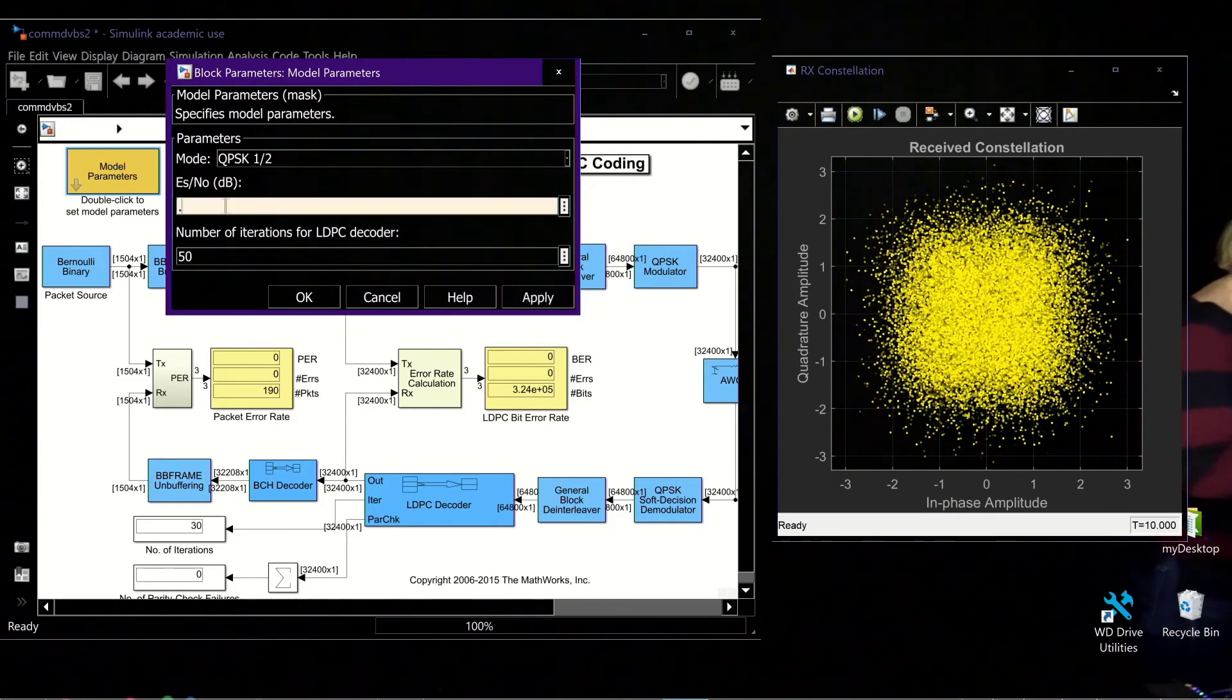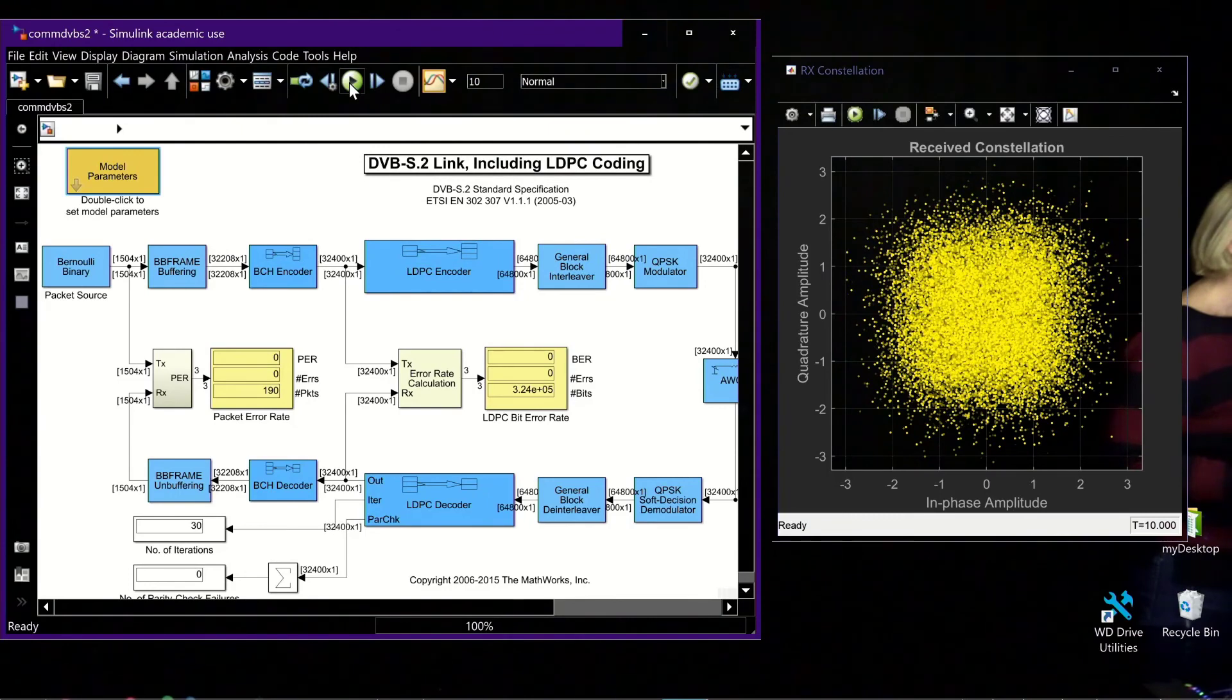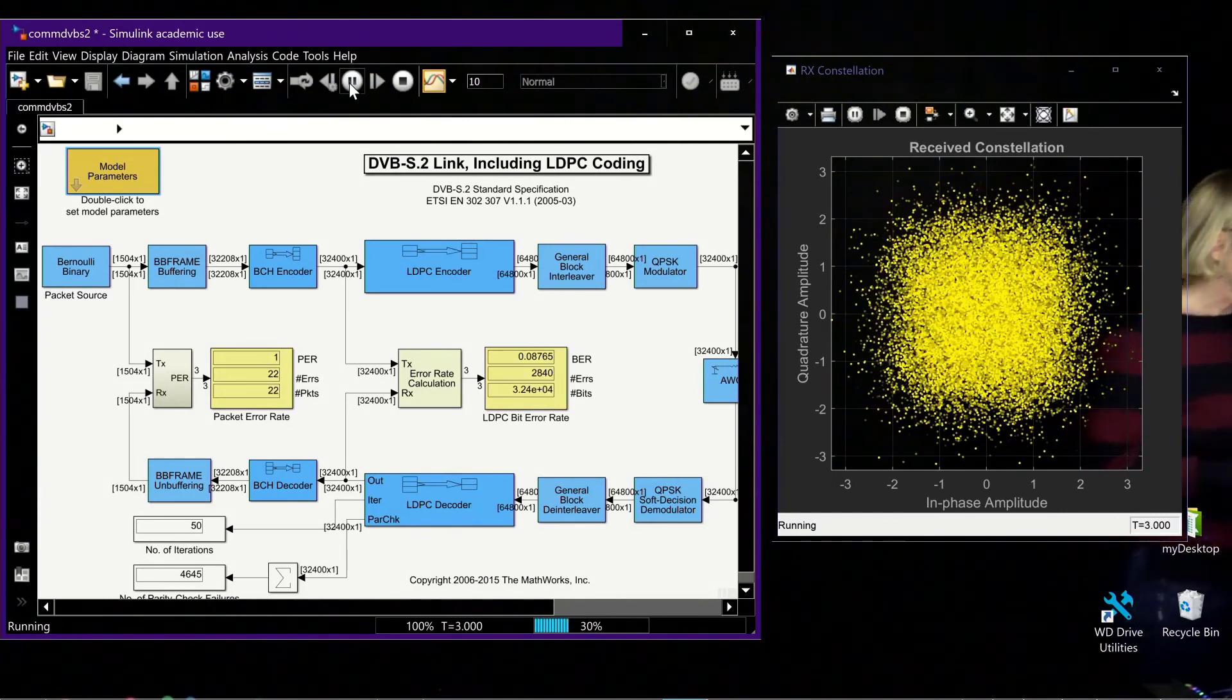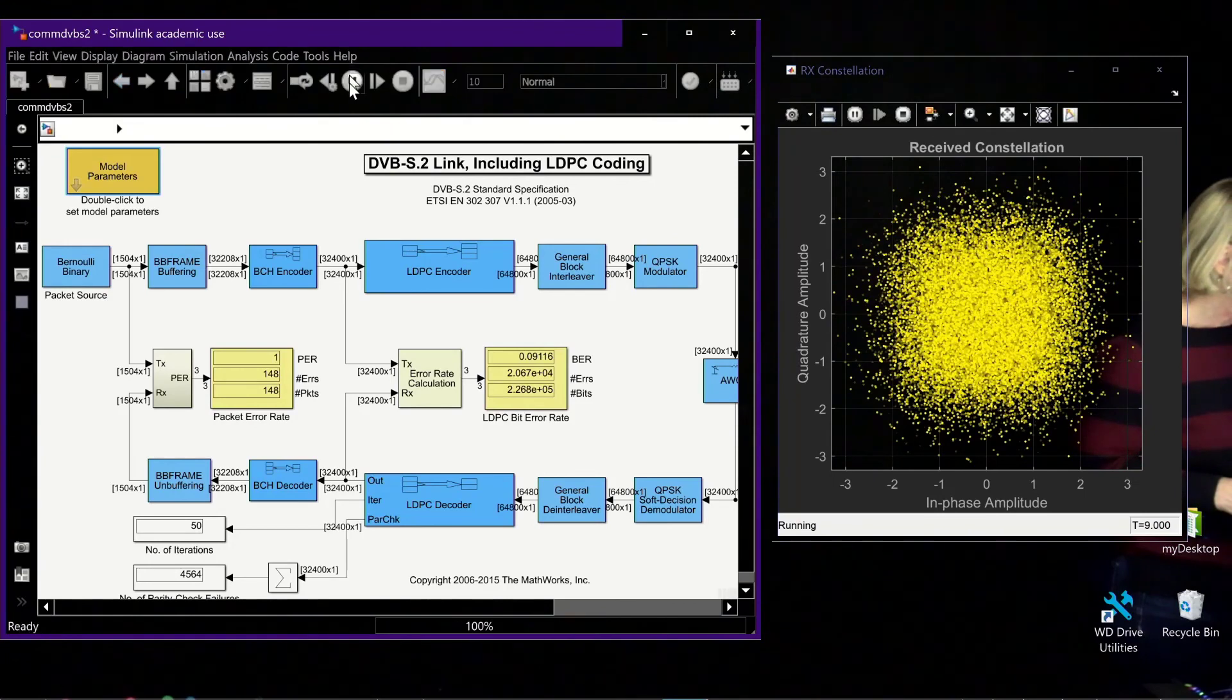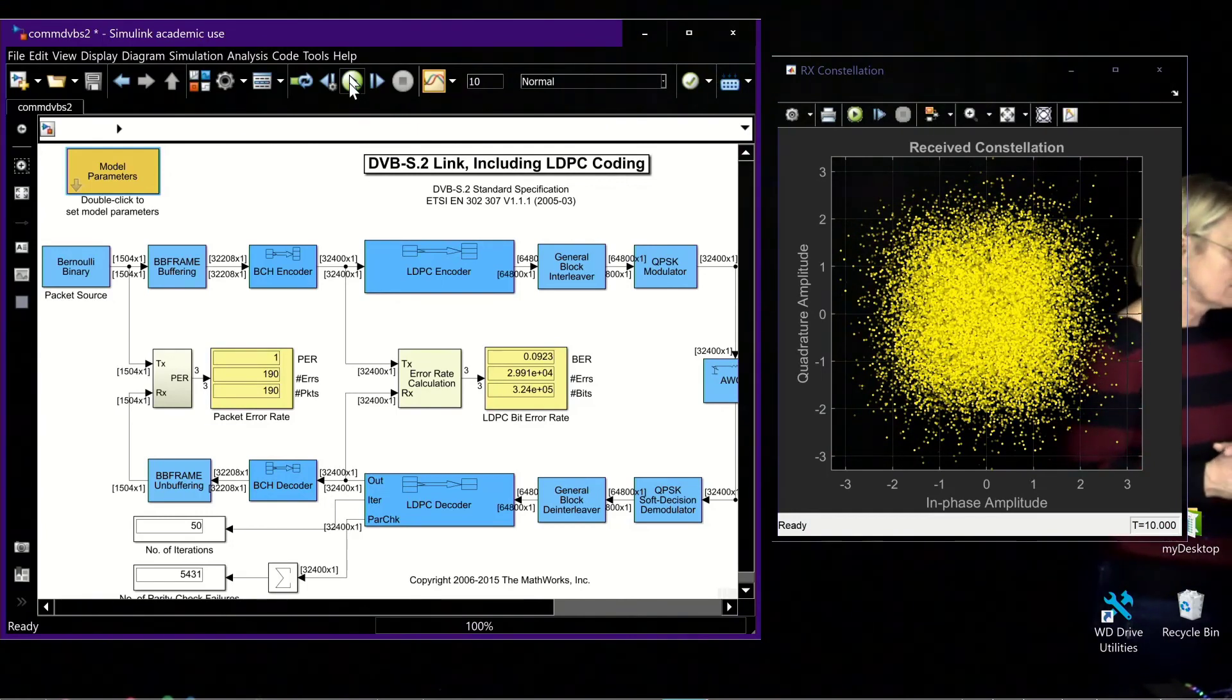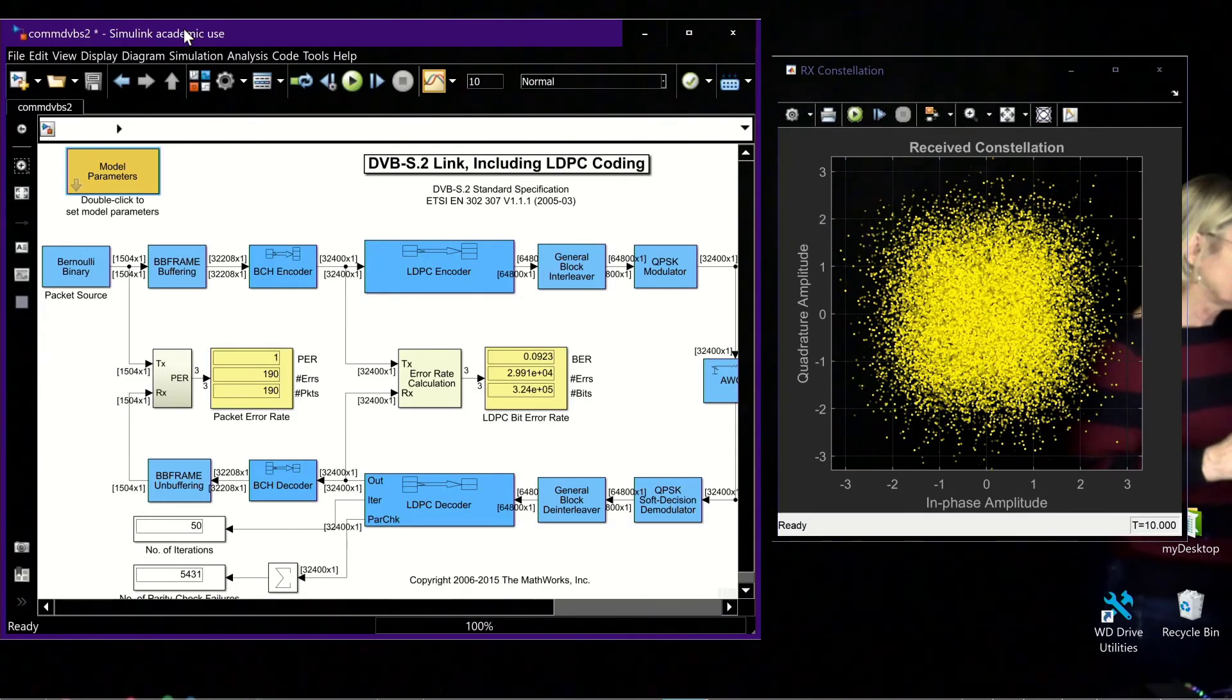Now I'm going to change this, instead of 1, I'm going to put 0.5. Half a dB difference in the signal to noise ratio. I run it again. The cloud looks similar because it's not terribly different, 0.5 versus 1. But we can see now that we're having a huge number of errors. Now my error rate is going up to something close to 10 percent.